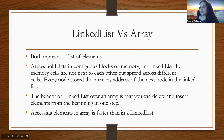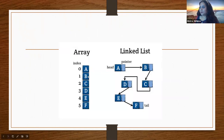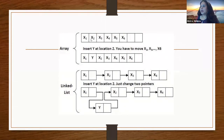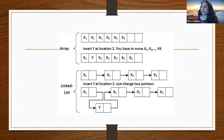This diagram demonstrates the insertion comparison. For an array, you have to move elements if you want to insert Y at the second position. For a linked list, however, if you want to insert Y at the second position, you are just changing two pointers — one for X1 and one for Y. Linked list has an advantage over an array here.